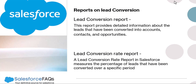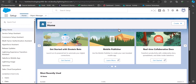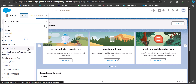For example, you can show the lead conversion rate report for this quarter and set a target for the next quarter based on it. Now I will navigate to my Salesforce developer console and show you how to create both of these reports. I am logged into my Salesforce developer console and we will navigate to the Reports tab, either through the App Launcher — click on it and search for and select Reports.